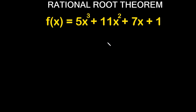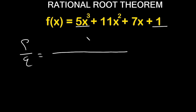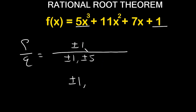Here's our last problem. Check the order — yes, it's in order with x cubed at the beginning, so my leading coefficient is 5. My constant is 1. Writing this out: p over q equals factors of my constant, which is plus or minus 1, over factors of my leading coefficient, which gives plus or minus 1 and plus or minus 5. Dividing out I get plus or minus 1 and plus or minus 1 over 5. Those are the possible rational roots of this polynomial.